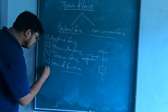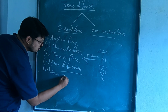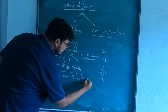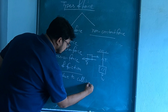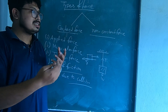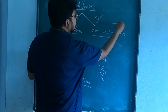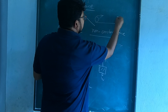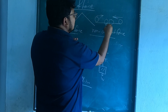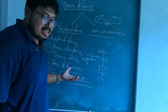Next one is force due to collision. When two objects collide with each other — for example, if one ball is coming from this direction and another ball is coming from this direction — after some time they will hit and collide. That is called force due to collision.